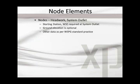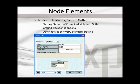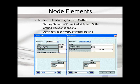Let's look at the nodes, or zero-length elements. The starting station is not input at the headworks — it's input at the system outlet. The system outlet ground elevation is optional, used for comparison. At the headworks, the invert is there, the ground elevation is optional, the channel group must be selected, the flow value must be input at the headwork, and then the headwork water surface elevation. The system outlet requires a station — could be zero, 1,000, or whatever — the invert elevation is required, ground elevation is optional, channel group is required, and the system outlet water surface elevation.